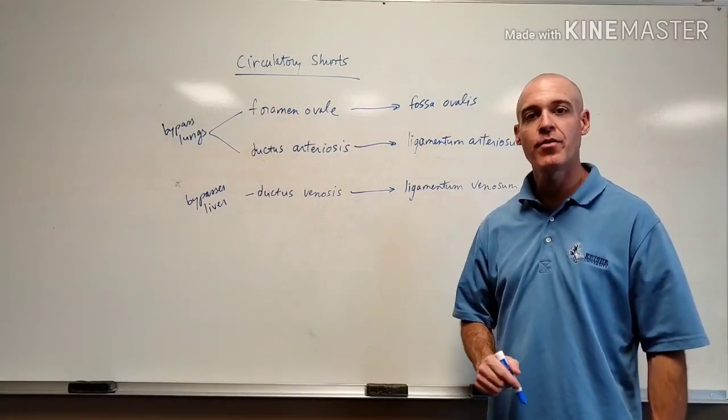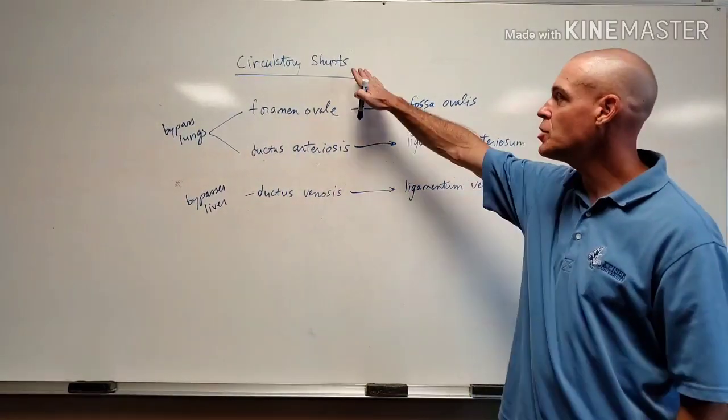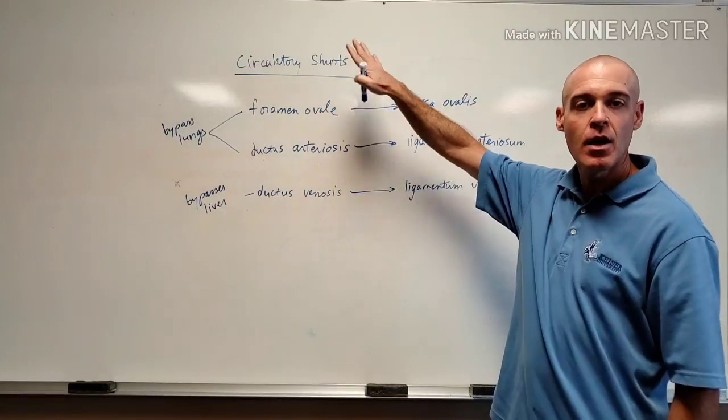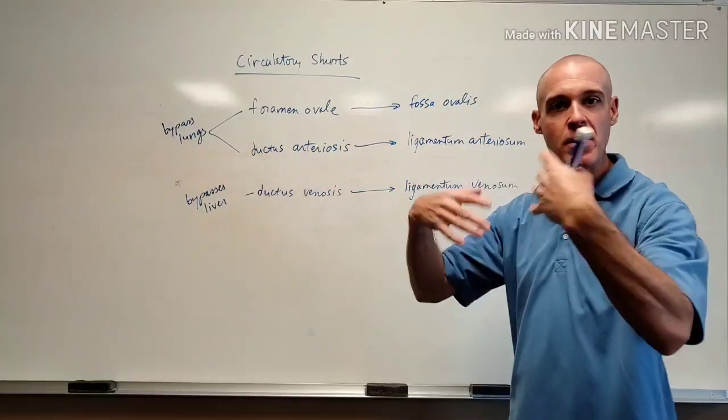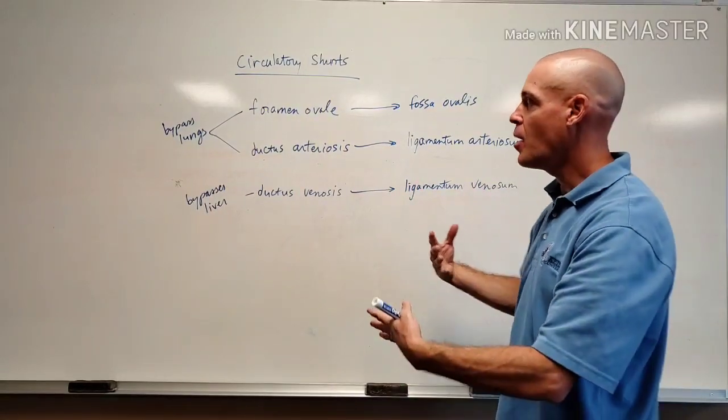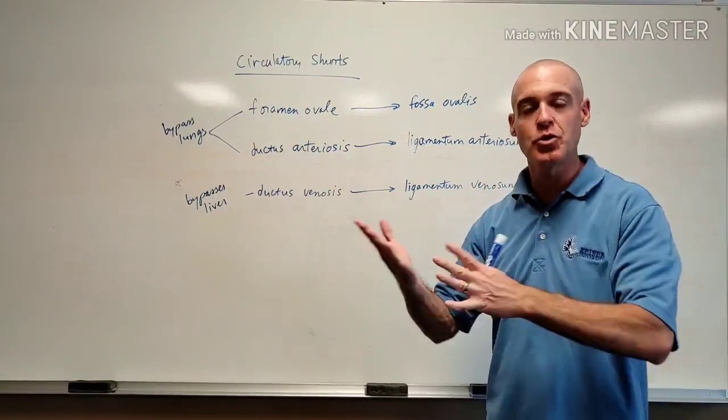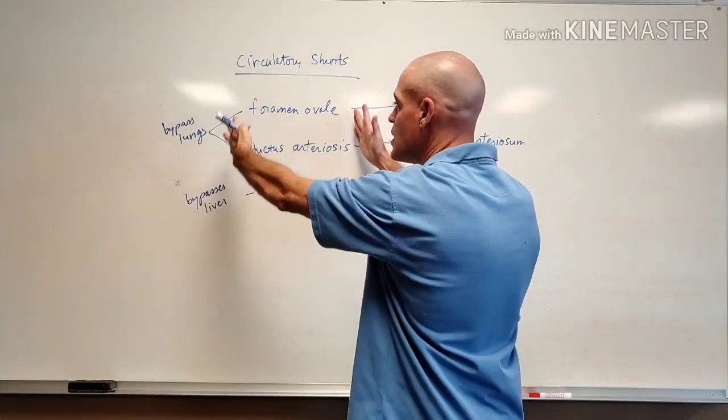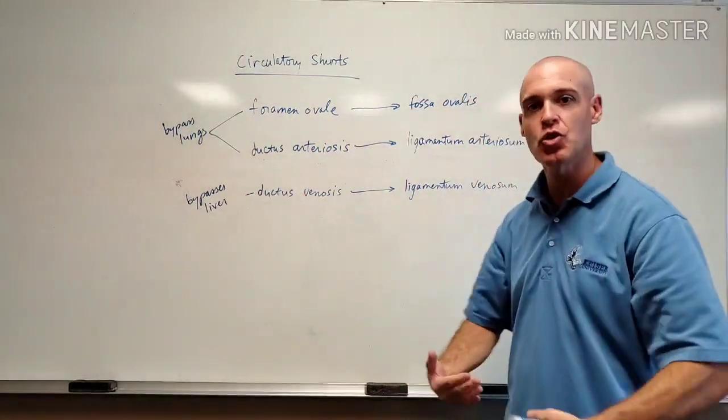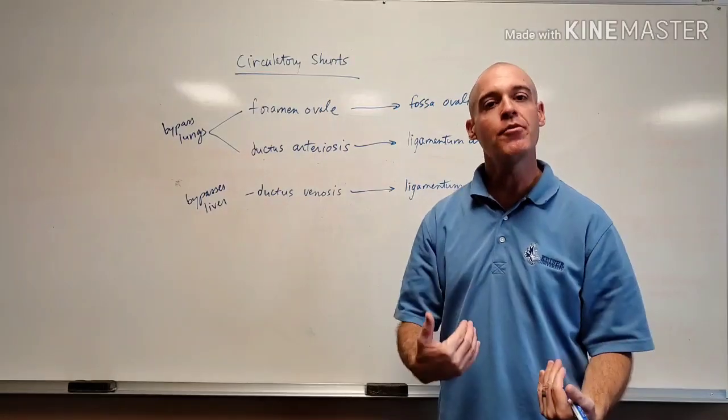Guys, here's another quick video on the circulatory shunts of the baby inside the womb when the baby is developing. There are some different circulatory pathways and these are the three differences in the circulatory system of the baby.